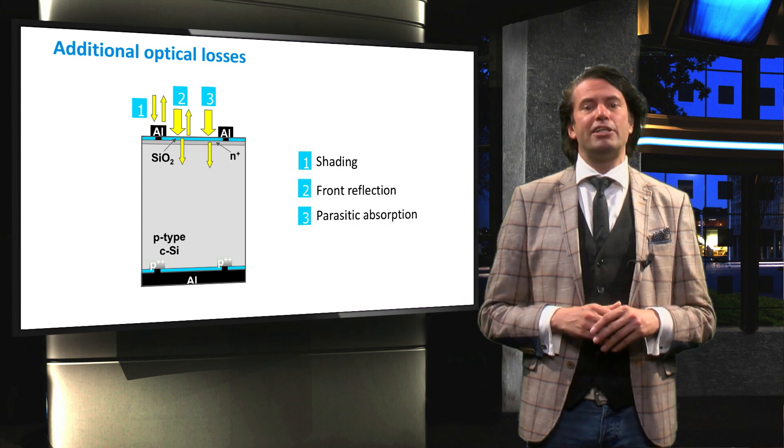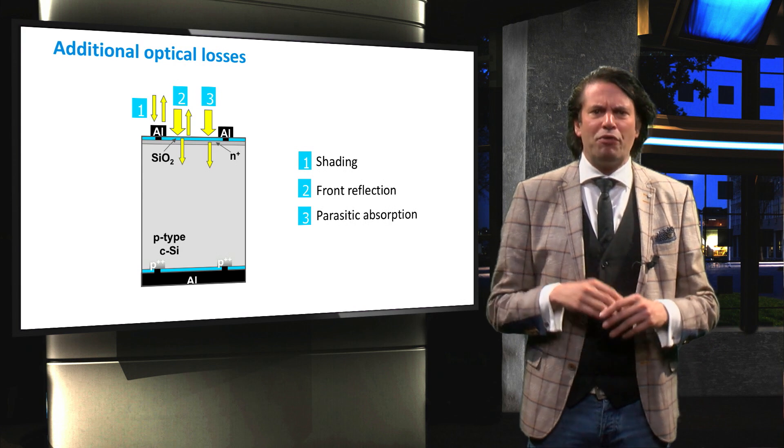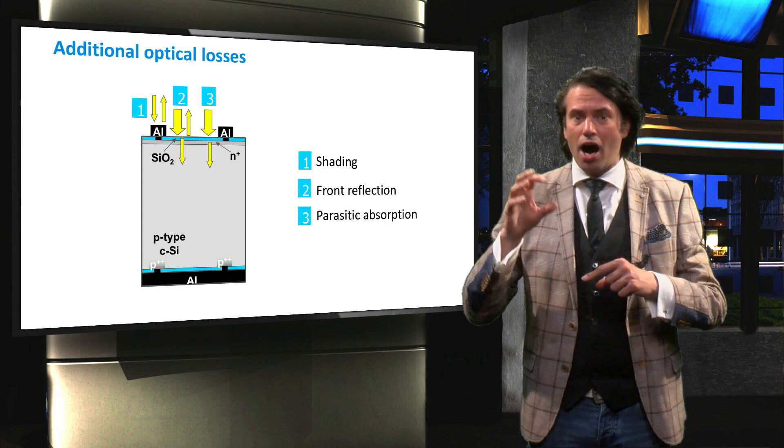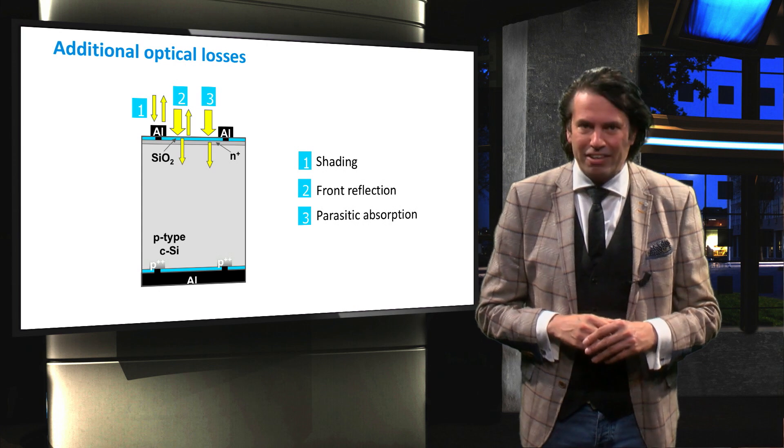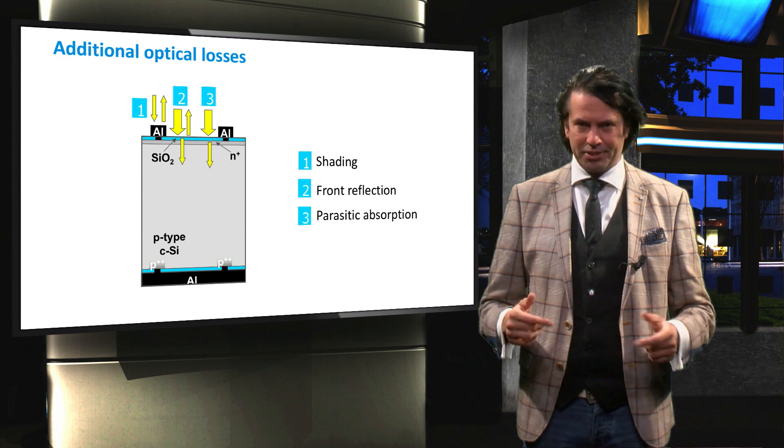Parasitic absorption is of special concern to solar cells with a PIN junction, where only the intrinsic layer I is a photoactive layer. PIN cells will be discussed later in this course.